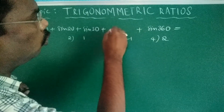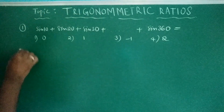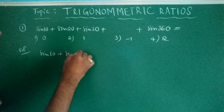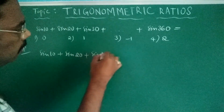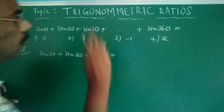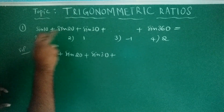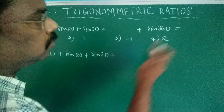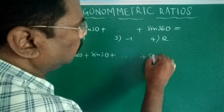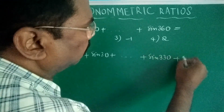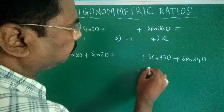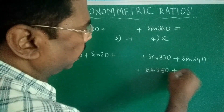Write down sin 10° + sin 20° + sin 30° + ... up to sin 360°. Every value has a difference of 10 degrees. Before sin 360°, we have sin 350°, sin 340°, sin 330°, and so on — sin 330° + sin 340° + sin 350° + sin 360°.